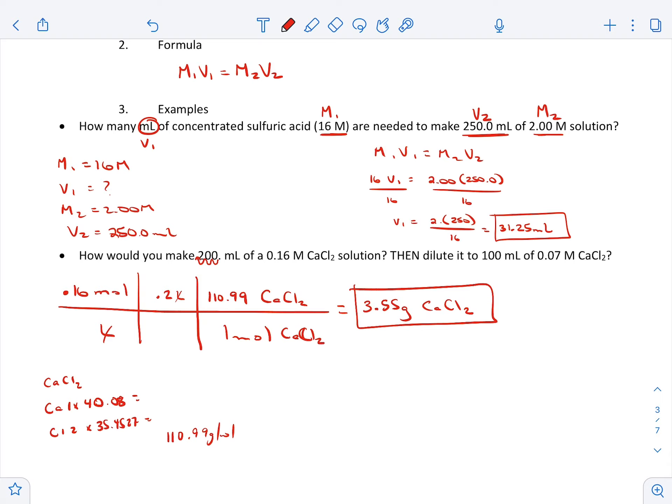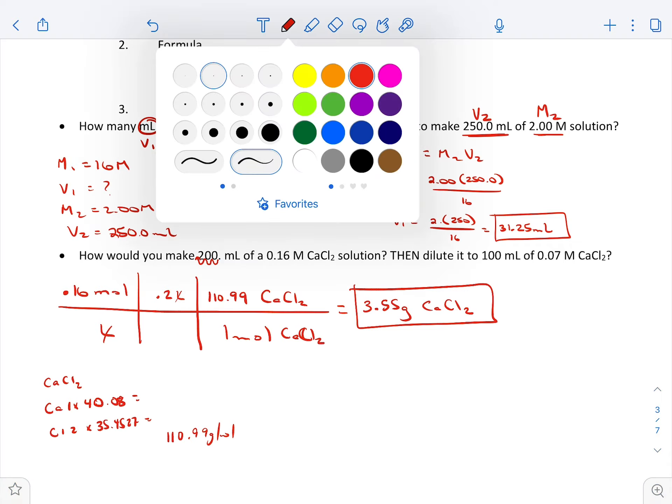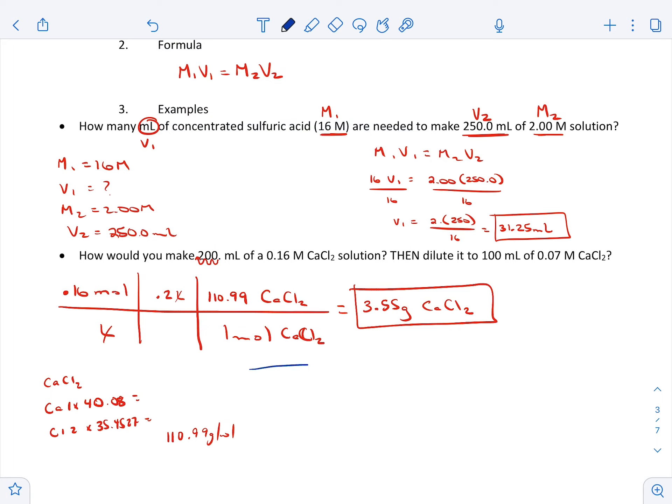All right, awesome. Now there's another part to this question though. It says then dilute it to 100 mils of 0.07 molarity. So this is going to be M1, this is going to be V1, all right, and here is M2. We're actually trying to figure out V2 in this case because we need to know how much of this 0.16 that we need to use.